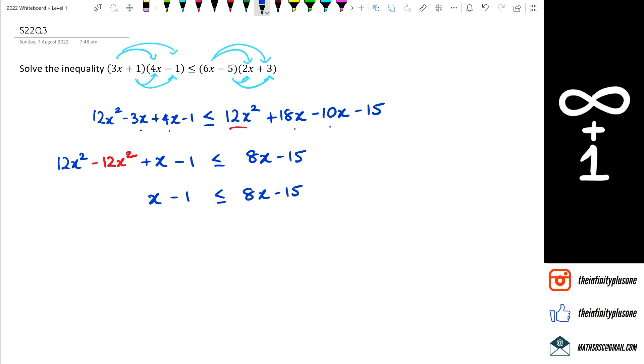So rearranging this, I've got first I'm going to get rid of the 8x. So when I bring it to the left hand side, it's going to become minus 8x. And as for the negative 1, I'm going to take to the right hand side, which will become plus 1. So on the left hand side I've got negative 7x is less than or equal to negative 14.